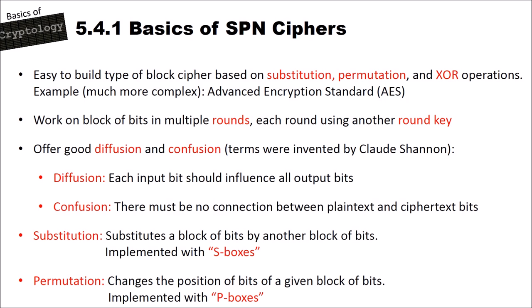SPN ciphers work on blocks of bits in multiple rounds, and each round uses another round key. Substitution permutation networks offer good diffusion and confusion — terms invented by Claude Shannon. Diffusion means each input bit should influence all output bits, so changing a single bit in the plaintext or key influences all output bits. Confusion means there must be no connection between plaintext and ciphertext bits.